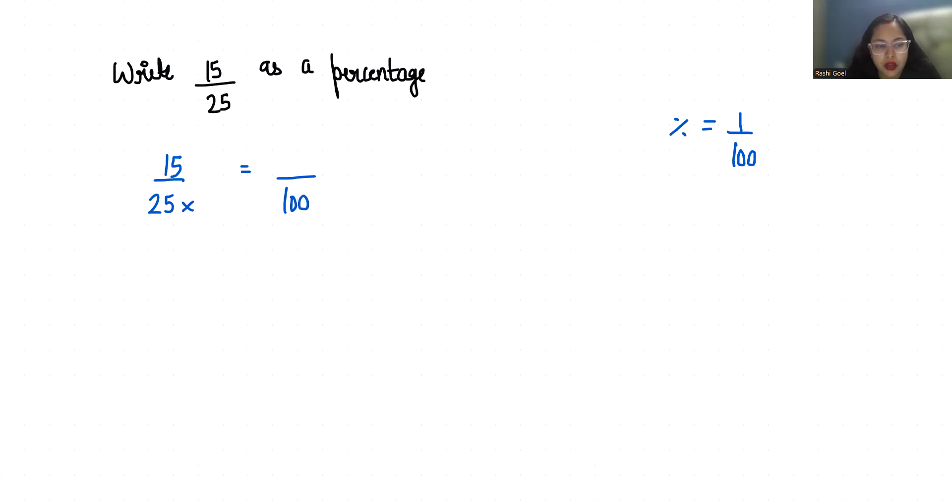am going to multiply by 4 in the numerator as well as the denominator. So 15 times 4 is 60, and 25 times 4 is 100. So it becomes 60 by 100, which I can write as 60 times 1 by 100. Now